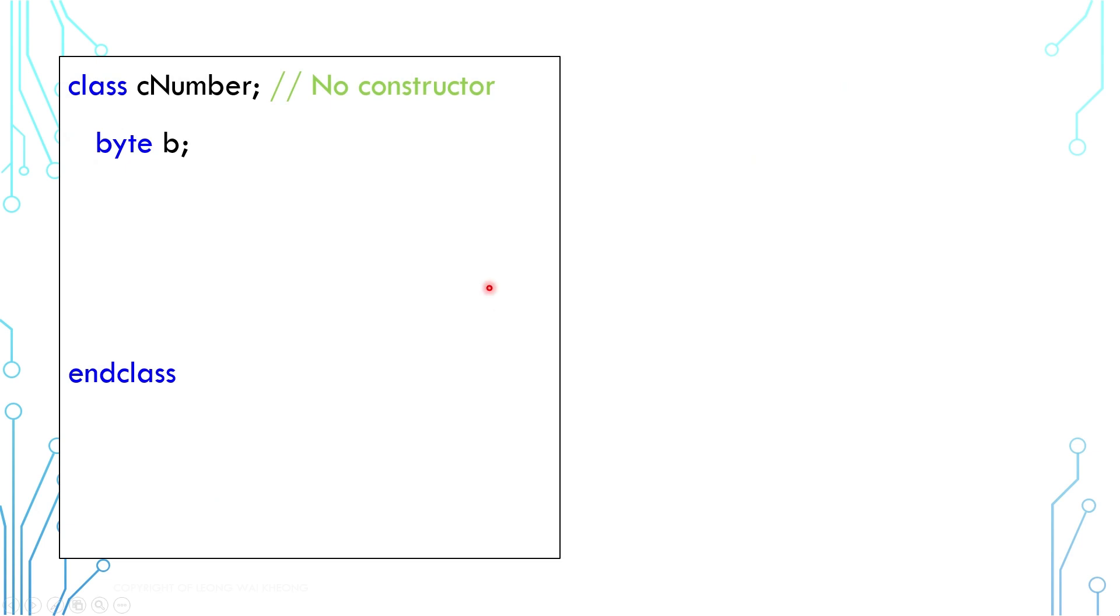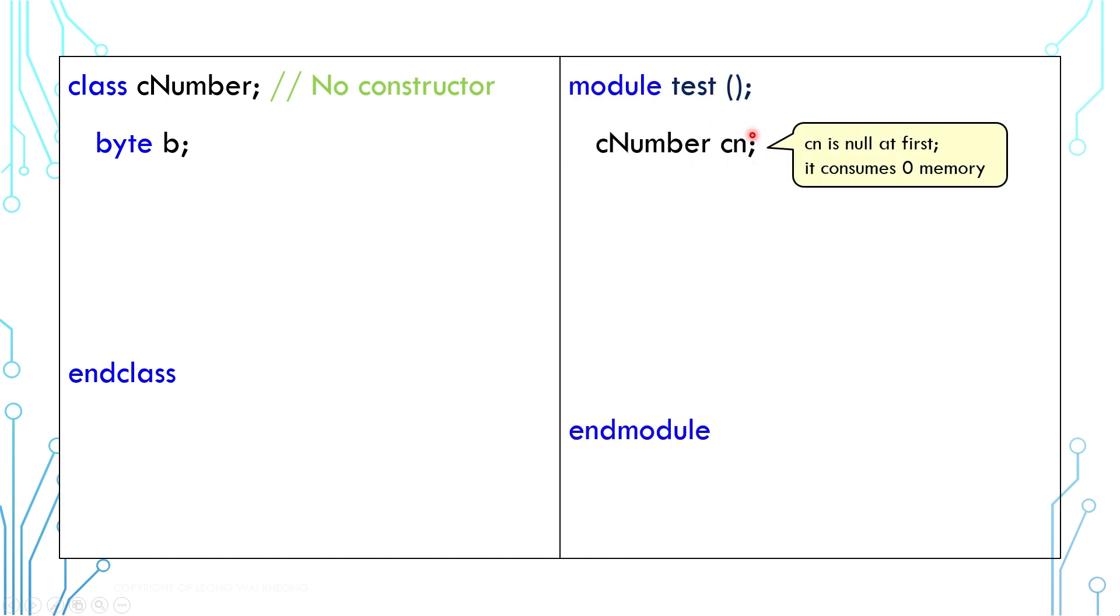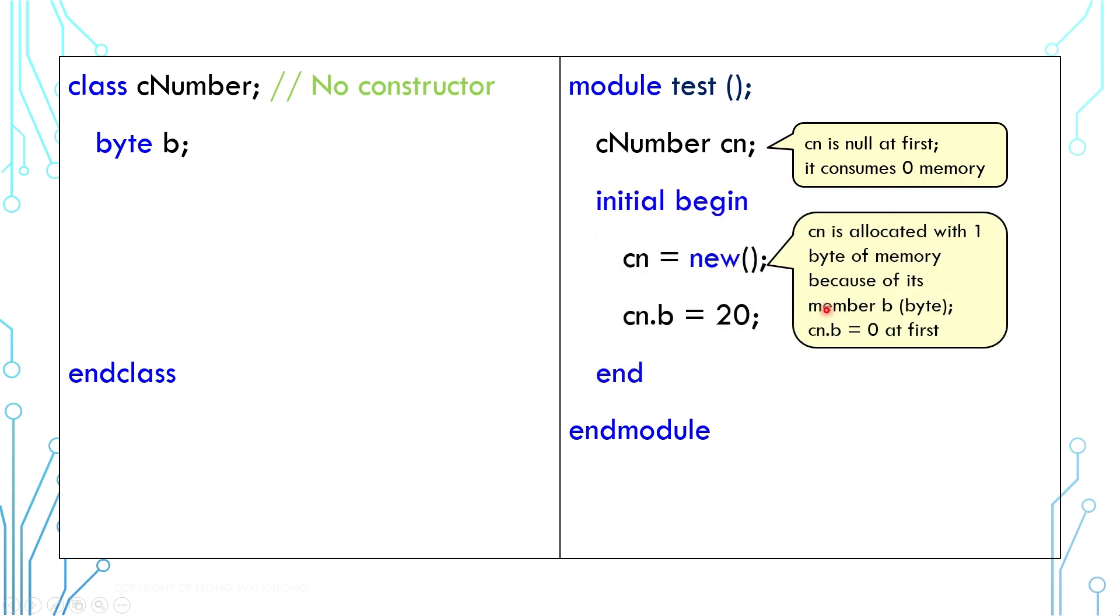A constructor or new function is used to allocate memory to a class handle. For example, this class cNumber contains a byte and therefore requires one byte of memory. When we create a class handle cn, it is null and generally does not consume memory. When we call new, the simulator will allocate memory, in this case one byte, to instantiate cn. And after that, cn can be accessed in a normal manner.